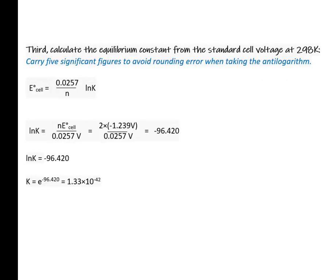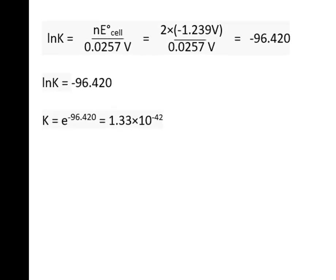Finally, we calculate the equilibrium constant using the equation E°cell = (0.0257/n) × ln(K). We substitute the values into the equation and end up with an equilibrium constant of 1.33 × 10^-42.